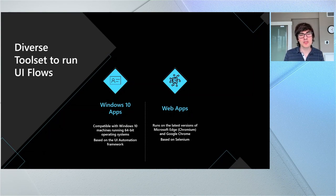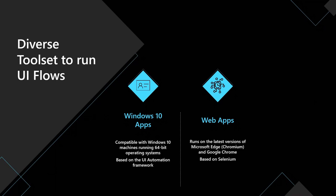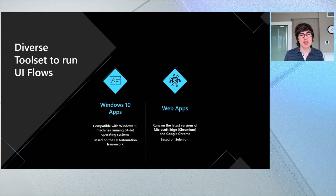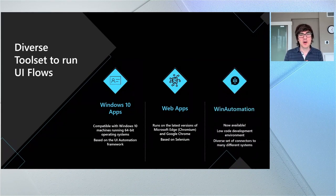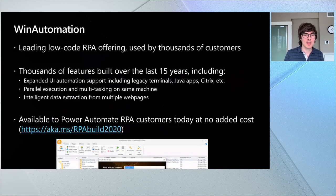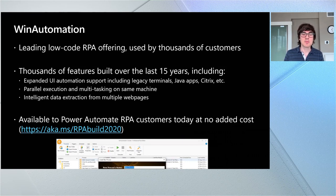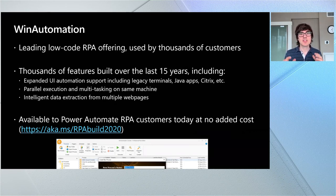There are a few important tools to talk about. The first is automating Windows 10 applications using the Windows UI automation framework. We also have the ability to automate web applications using a framework called Selenium. And new — I'd like to announce that you can also use something called Win Automation to automate your Windows applications running on your desktop. Today at Build, we are announcing that Microsoft has acquired Softimotive. Softimotive is a leading vendor in the RPA space used by thousands of customers, with thousands of features built over 15 years, including the ability to connect to legacy terminals, Java applications, Citrix, and more. This is available to all Power Automate customers who purchase RPA at no additional cost.